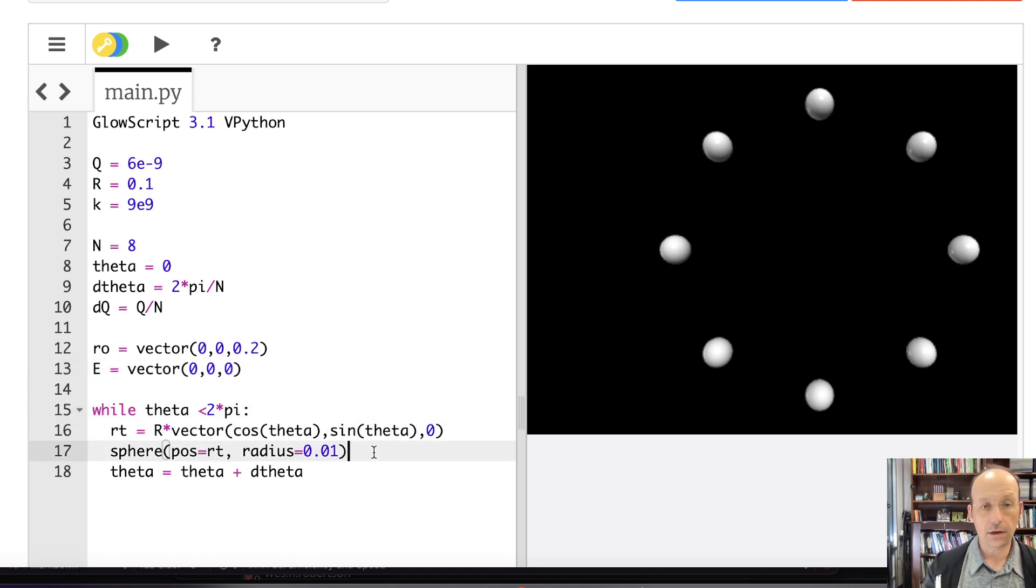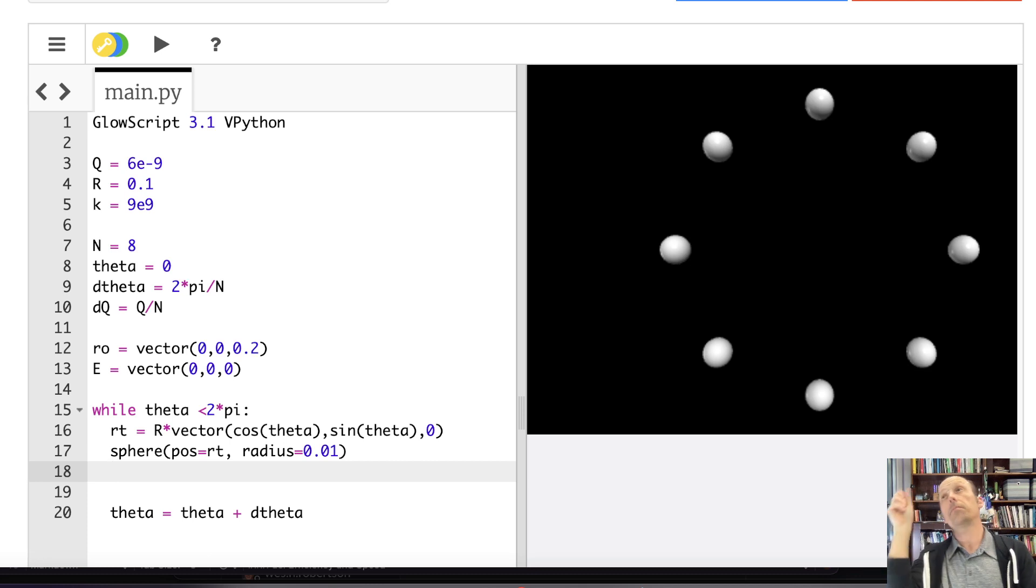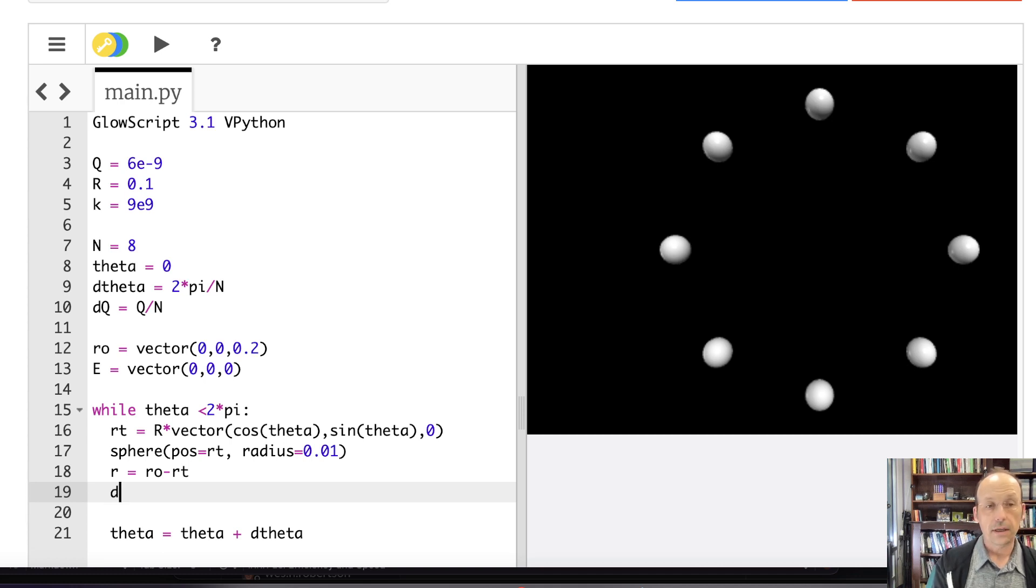Now in the loop I calculate r = r_o - rt. Then I can calculate the electric field dE = k × dq × norm(r) / mag(r)². Then add that value to my total: E = E + dE.